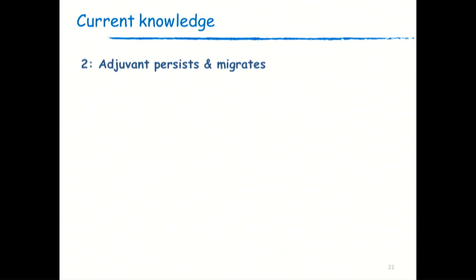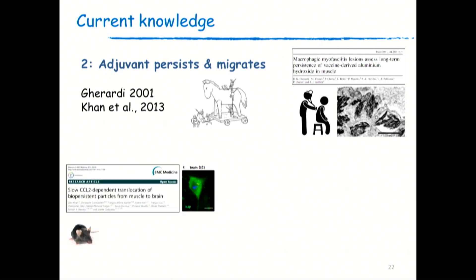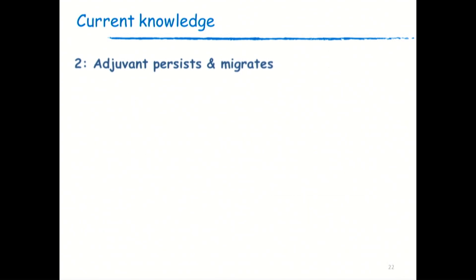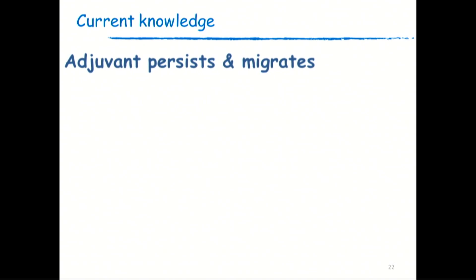The second point — I'm talking mainly about aluminum hydroxide, because this is the molecule for which we have far more data than aluminum phosphate — is that aluminum hydroxide can persist and it can migrate through the body. This is quite like the story of the Trojan horse with macrophages and aluminum particles. We have observed this persistence in humans and in animals, and in animals we have observed translocation into draining lymph nodes, spleen, and brain — in rodents and also in sheep. Adjuvants can persist and can migrate; they are not rapidly eliminated from the body.